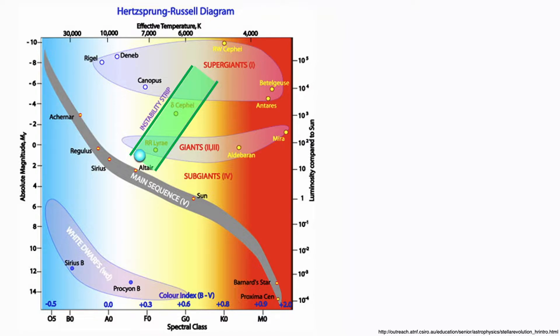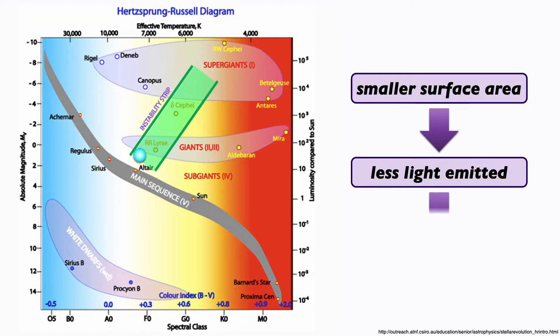For example, this star moves upwards and to the right as it expands, cools down, and grows brighter. Then it'll move downwards and to the left as it contracts, heats up, and appears somewhat dimmer as a result. Remember, physically smaller stars have less surface area, and a smaller surface area means less light emitted, and that means dimmer stars.